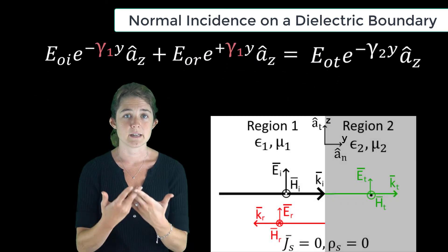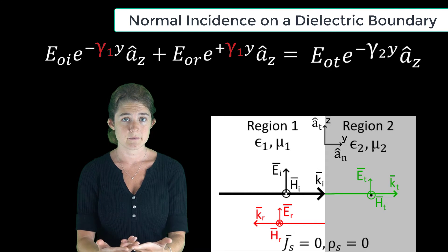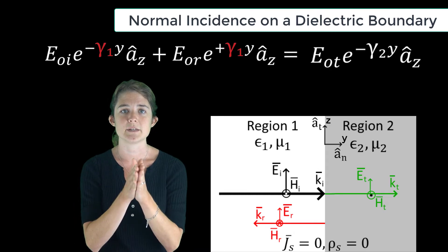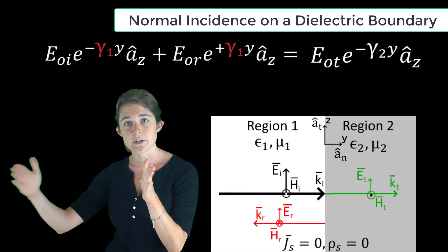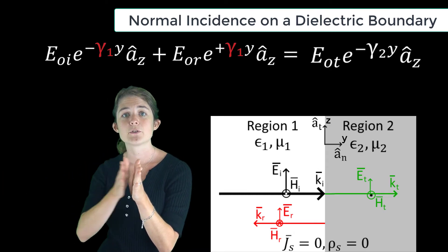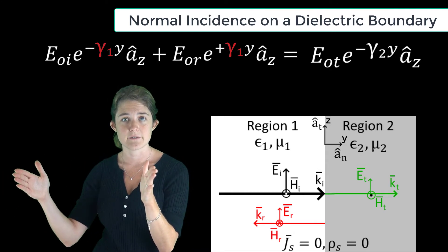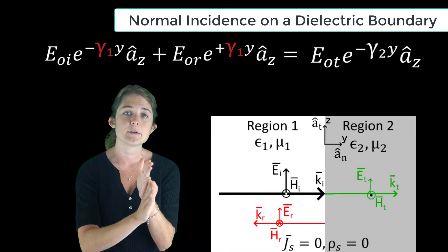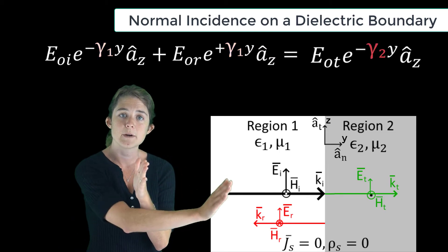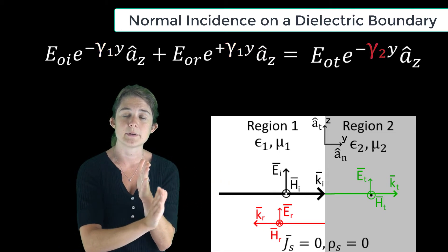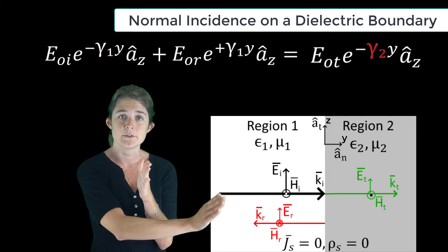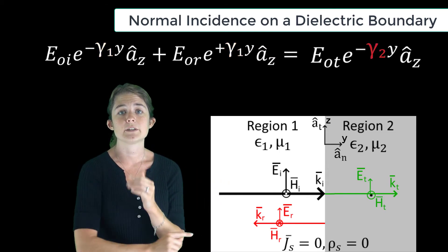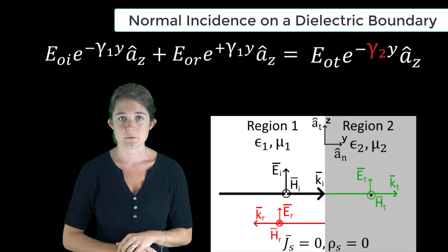We can rewrite this equation accordingly. Note that we're using the propagation constant gamma 1, corresponding to the material properties of region 1, for the fields on the left side of the equation, and gamma 2, corresponding to the material properties of region 2, for the fields on the right side.